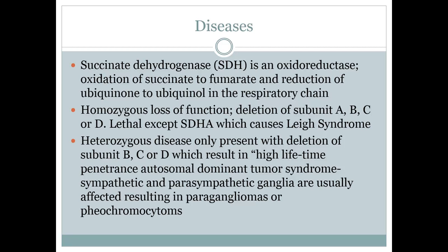If there is a homozygous mutation — meaning both sets of alleles are affected — such as a deletion of subunit B, C, or D, it will be lethal in the embryo and terminate the pregnancy. However, if the deletion is on subunit A, there will be a birth and it will result in juvenile subacute necrotizing encephalomyelopathy, also known as Leigh's syndrome.